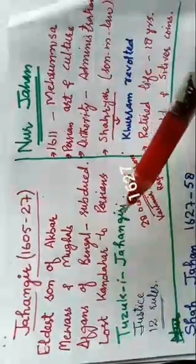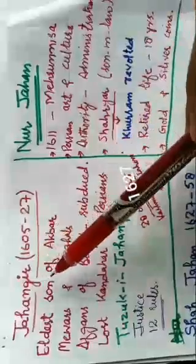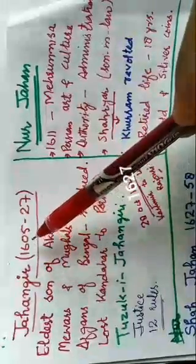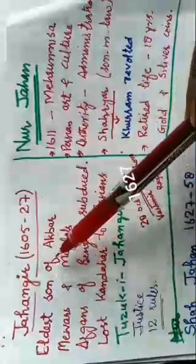Today we are going to discuss yet another greater Mughal, that is Jahangir. Jahangir ruled over India from 1605 to 1627. He was the eldest son of Akbar.